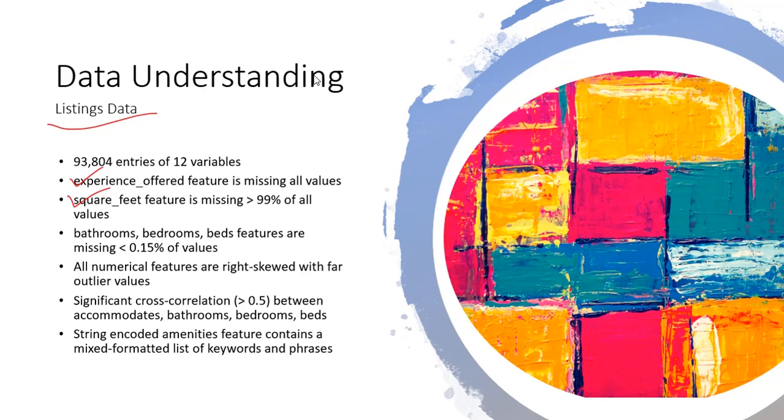Again, the numerical features are right skewed with a lot of outliers at the far right end. There's a huge correlation between the number of people that a property accommodates, the number of bathrooms, the number of bedrooms and beds, which makes sense. Very large properties often have a lot of bathrooms and a lot of bedrooms and a lot of accommodations. We also note that there's a bit of an issue with string encoded amenities, and they're mixed formatted. There's not a consistency there.